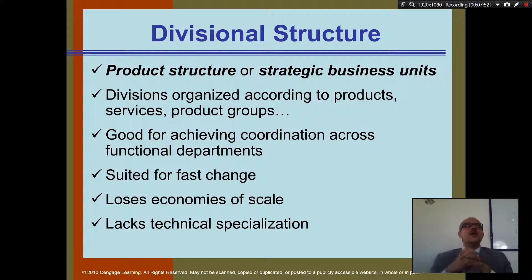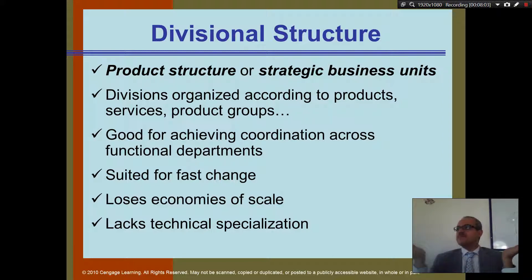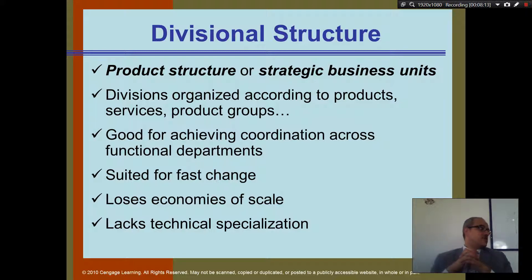Another example: LIU has a School of Business and a School of Pharmacy — organized by product or service type, not by function. So LIU is divisional, not functional.